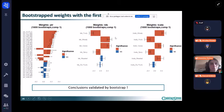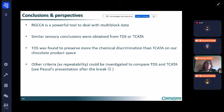So as a conclusion, RGCCA is a really powerful tool to deal with multi-block data. Here I chose an example but there are many ways to do multi-block analysis. We have seen some similar conclusions in TDS or TCATA, but TDS was found to preserve more the chemical discriminations than TCATA in our case, in the chocolate product space. Other criteria such as repeatability could be investigated to compare TDS and TCATA, and that is a teaser for Pascal's presentation after the break.